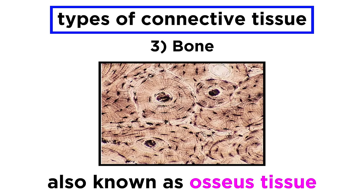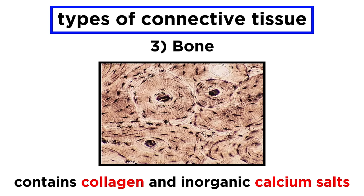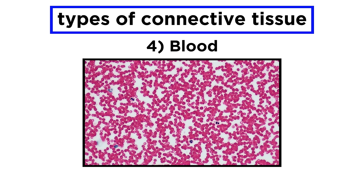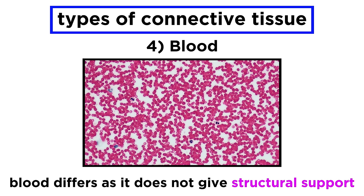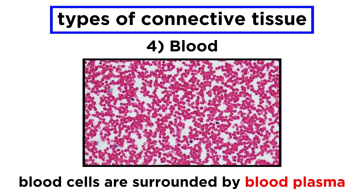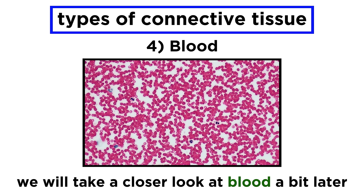Next, let's take a look at bone. Bone, or osseous tissue, is much harder than cartilage or connective tissue proper. The matrix of bone is similar to cartilage in that there is lots of collagen, but there are also inorganic calcium salts, and that's the component that makes bone so hard. Unlike cartilage, bone does contain blood vessels. Speaking of blood, which is the fluid found in blood vessels, this is also the fourth type of connective tissue. We call blood a connective tissue because it develops from mesenchyme, and blood cells are surrounded by a non-living fluid matrix called blood plasma. Since blood is so different from the other types we've discussed, we will hold off on describing it until we investigate the circulatory system.